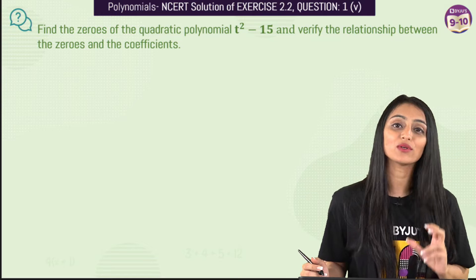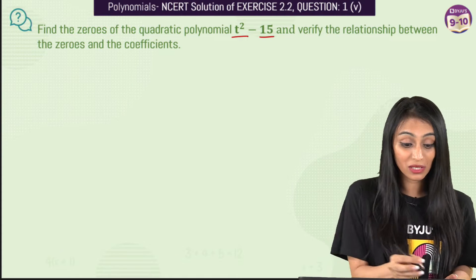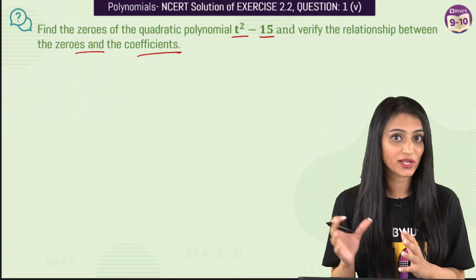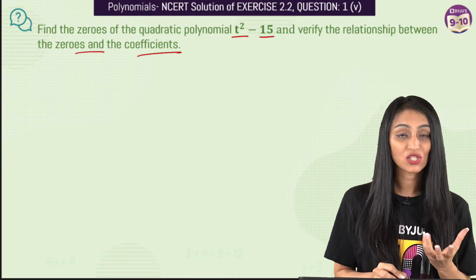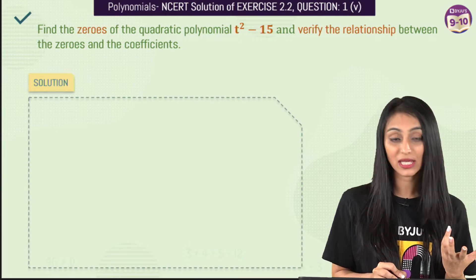Find the zeros of the quadratic polynomial t² - 15 and verify the relationship between the zeros and its coefficients. These types of questions are good from an examination point of view. First, we'll find the zeros and then verify the relationship between the zeros and coefficients.